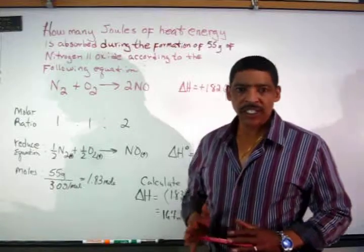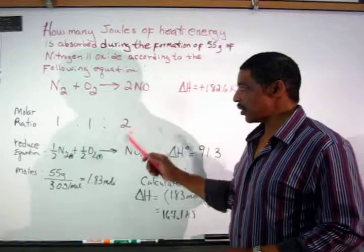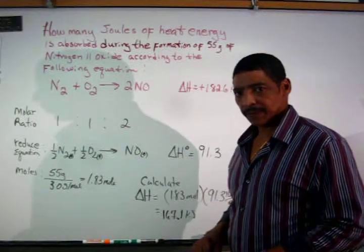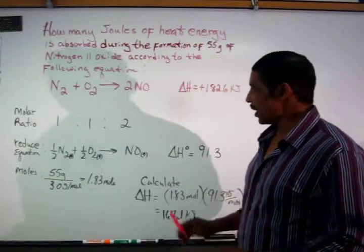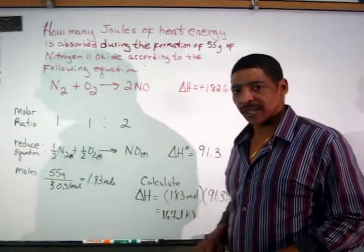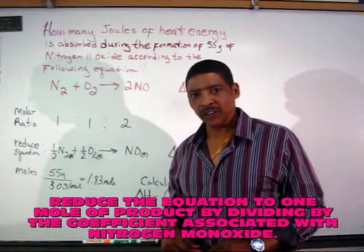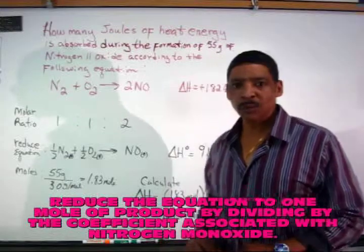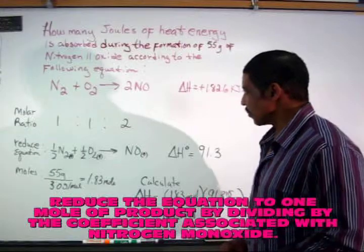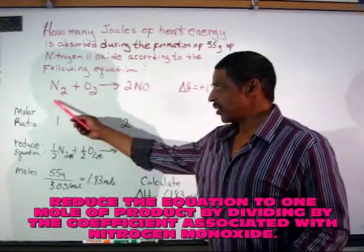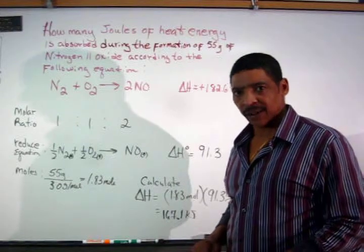I know it is endothermic because the Delta H for the reaction is positive 182.6 kJ. The molar ratio of the reaction is 1 to 1 to 2. Since the practice problem is asking about the formation of N2O, it is better to rewrite this equation in terms of 1 mole of N2O. To do so, simply divide the entire equation by 2.